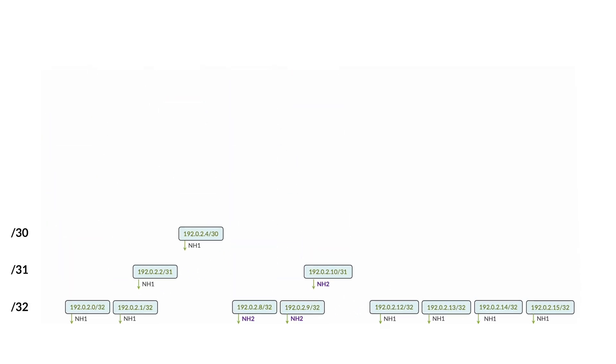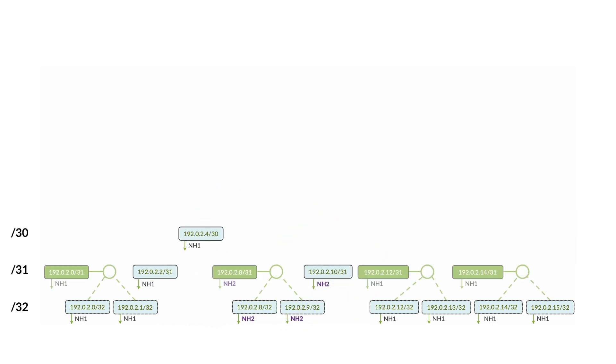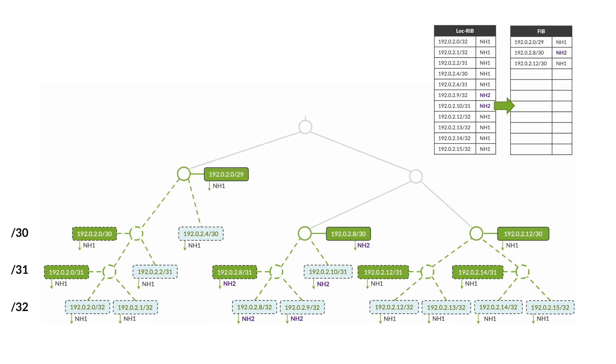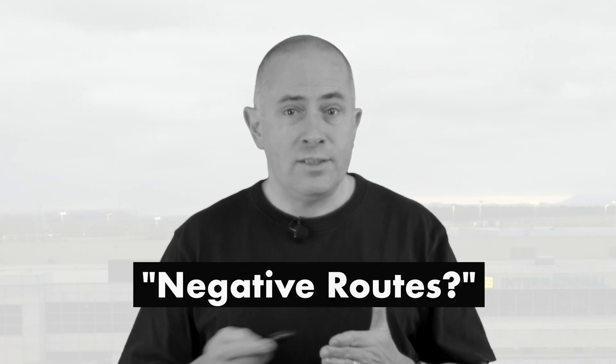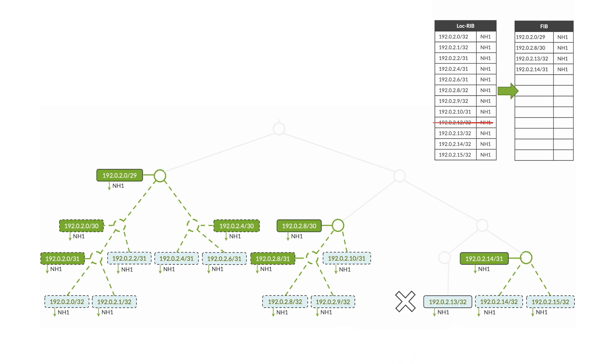In another example with /32s, /31s, and one /30 but with two different next-hop addresses, we quickly reach a point where routes pointing to NH1 cannot be gathered with routes pointing to NH2 — and that's how far the compression can go. A common question: if certain entries are missing to build an aggregate, can we create negative routes to fill the gaps? The answer is no. If there is no contributor to create the aggregate, we don't invent a route pointing to 0.0.0.0. The algorithm keeps it simple. If 192.0.2.12/32 is not present, the structure will be compressed into four entries, not just one.